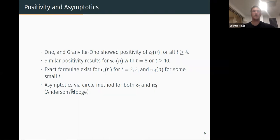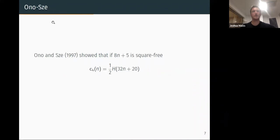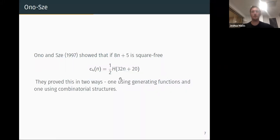What else do we know? We know asymptotics via the circle method for both c_t and sc_t. This is by a paper of Anderson and a paper of Ahlgren. So we know vaguely how these things grow. And I mentioned t equals 2 and 3—well c_4 is somehow special. This is Ono-Sze in 1997 and they showed that if 8n+5 is square-free then the number of 4-core partitions is given by a class number. So this is somehow a strange connection between 4-core partitions and class numbers. How do they show this? They showed this in two ways: one using generating functions and modular forms, the other using combinatorial structures.